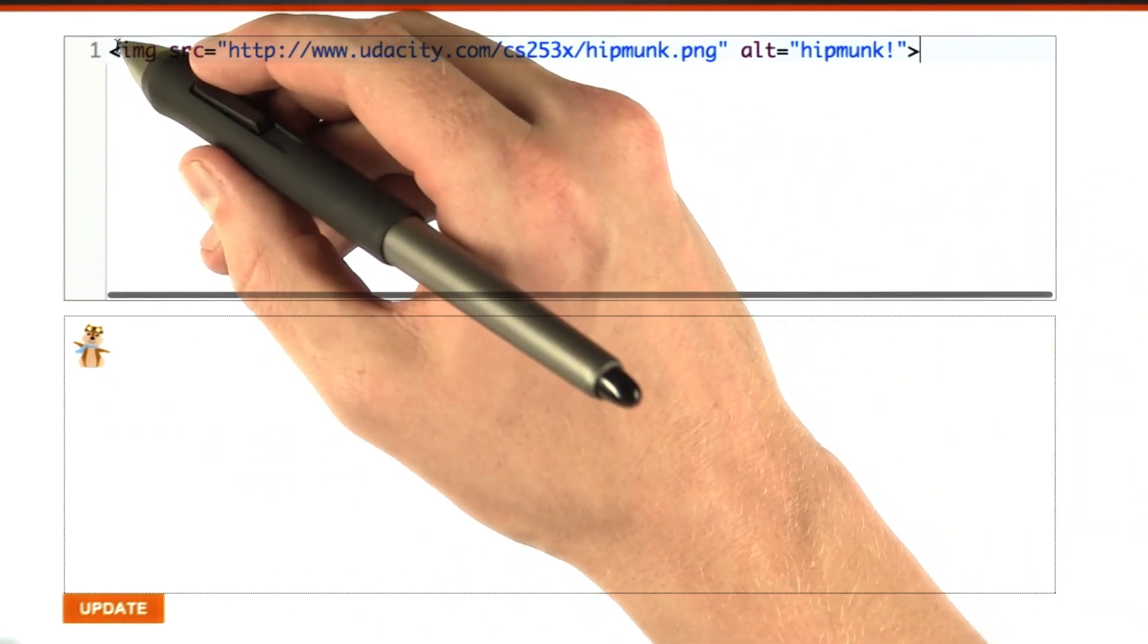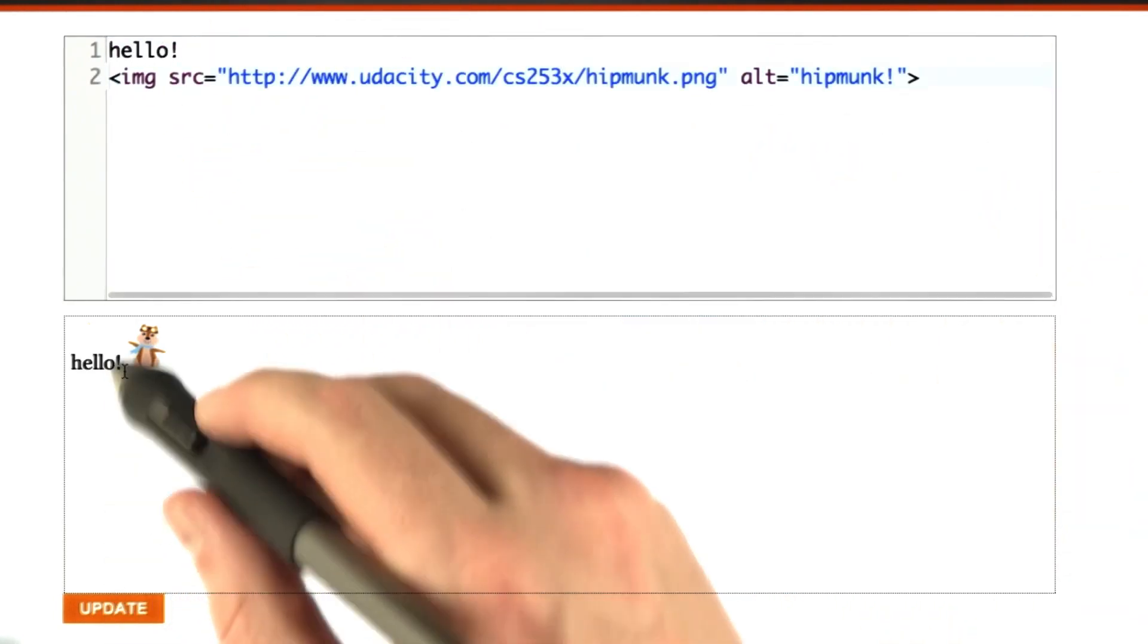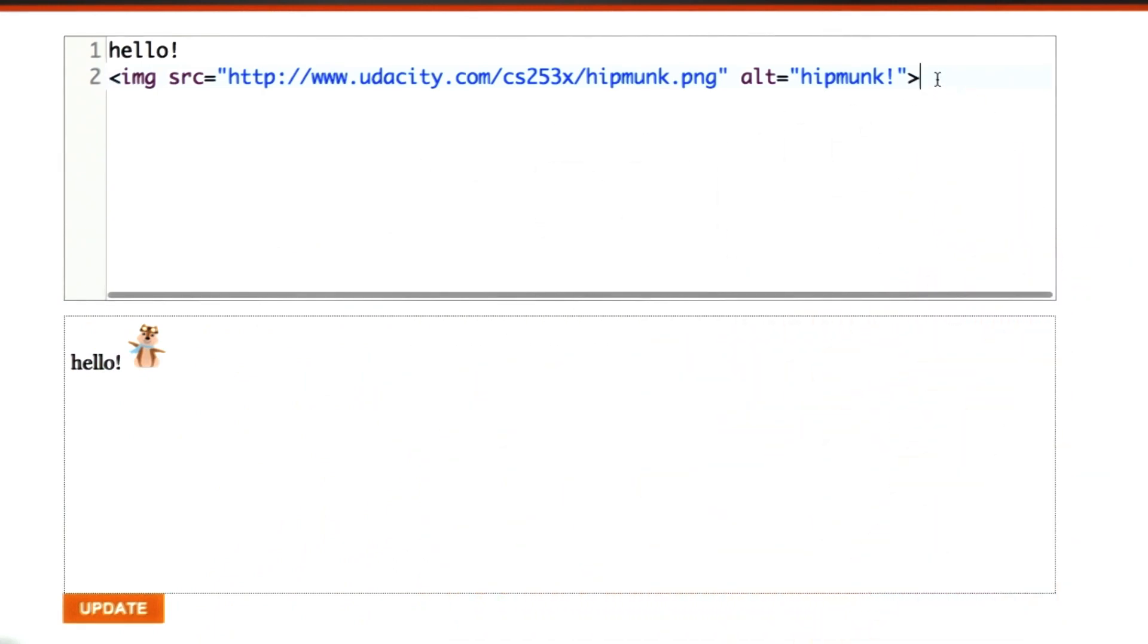Now, a couple other things we can do. I could put some text here. There's our text. Images just appear in line with text.